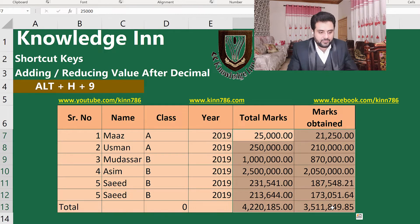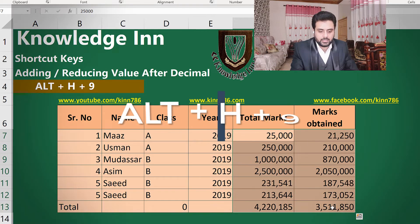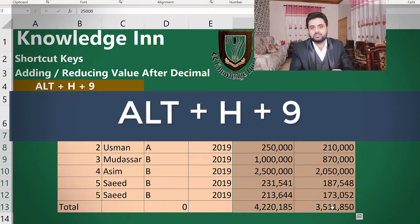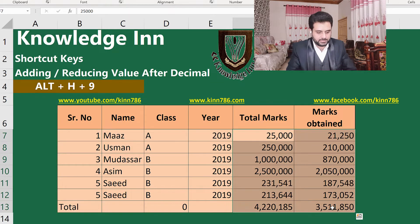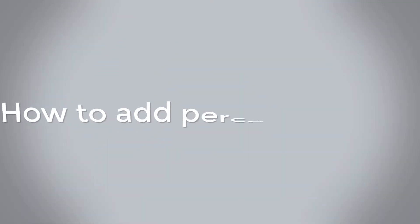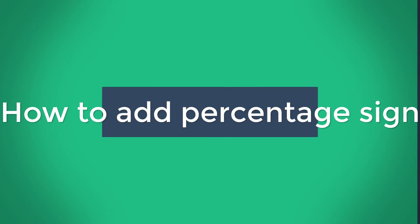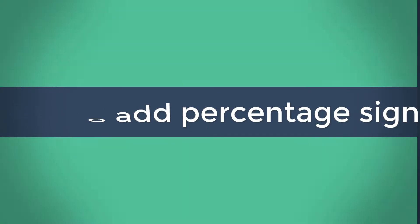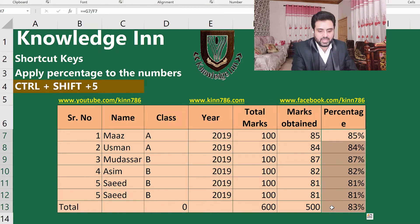If we want to remove decimal points, we simply have to press Alt+H+9. Pressing Alt+H+9 will reduce the number of decimal places shown in those cells.